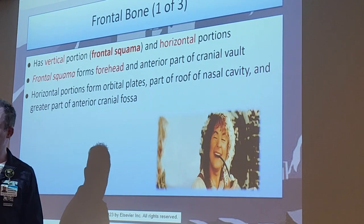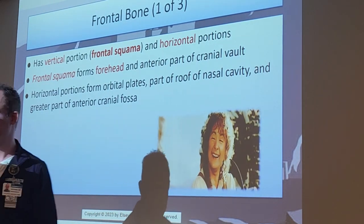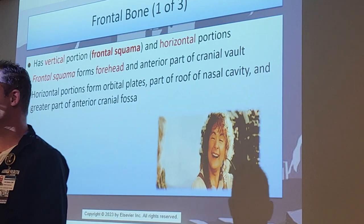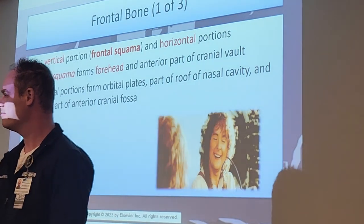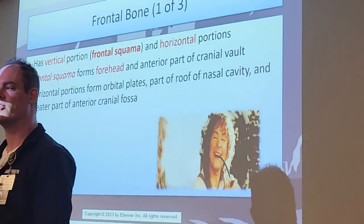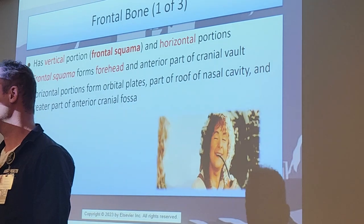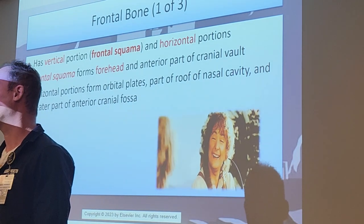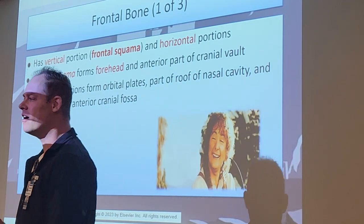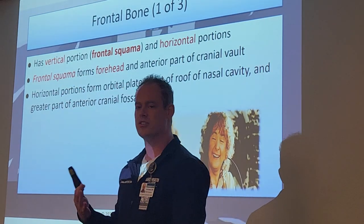How many cranial bones did we have? Eight in total. Which ones came in pairs? The parietal and temporal. Those come in pairs - left and right. The rest are all singular.